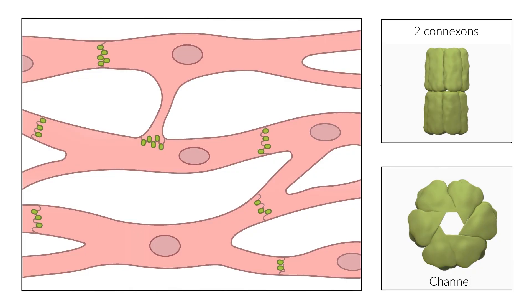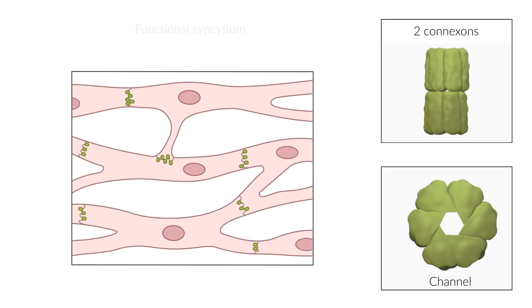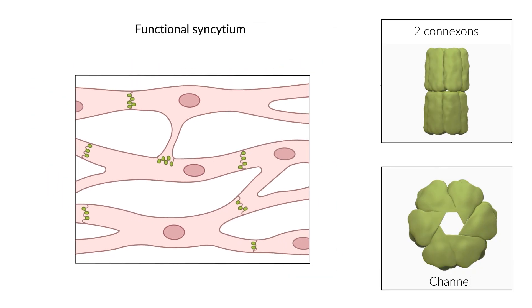Accordingly, it is termed a functional syncytium. In cardiac muscle cells, these serve for the orderly spread of excitation between cells. In the central nervous system, they connect astrocytes with each other and with oligodendrocytes.